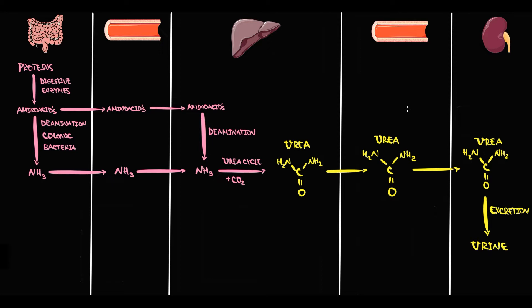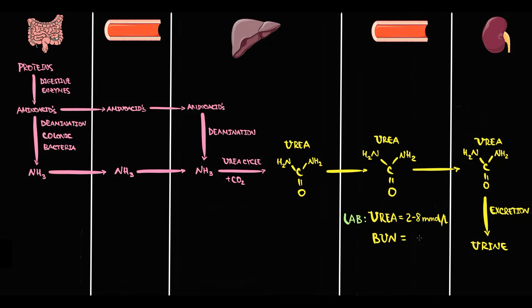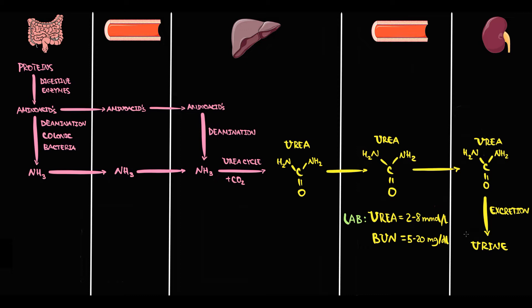In Europe, we determine the amount of whole urea molecules in the blood. In normal state, the concentration of urea in the blood is between 2 and 8 millimoles per liter. In the USA, blood urea nitrogen (BUN) is used for assessment — it measures only the nitrogen molecules within the urea molecule. The normal value of BUN is between 5 to 20 milligrams per deciliter. Urea and BUN are not the same thing, but every time urea is elevated, BUN is also elevated.